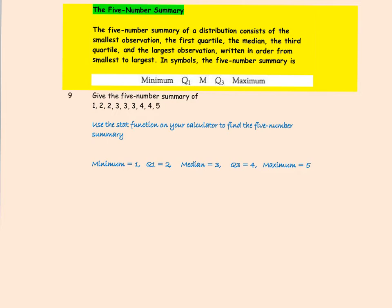Next we discuss the five-number summary of a distribution. What are the five numbers that can be used to describe the distribution — including its shape? We use the stat function in our calculator to figure out the five numbers: the minimum, the maximum, the median in the middle, the lower quartile to the left of it, and the upper quartile to the right.